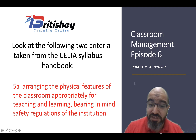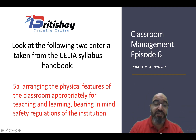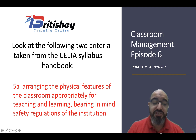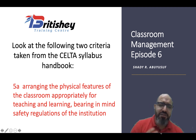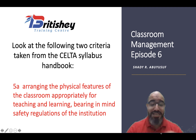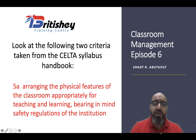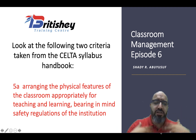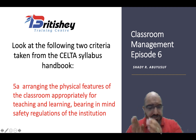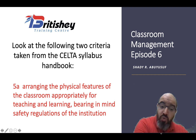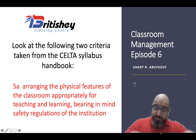Let's look at a criterion taken from the CELTA syllabus handbook — criterion 5A — which states: 'Arranging the physical features of the classroom appropriately for teaching and learning, bearing in mind safety regulations of the institution.' So if students need to have a conversation in pairs, they sit in pairs; in groups, they sit in circles; for a game, you change the seating for the game; for feedback, they sit in a U-shape. Classroom shapes need to keep changing according to your activities.